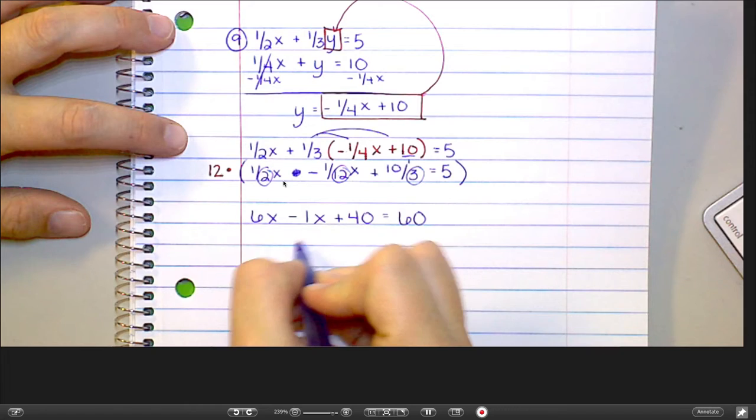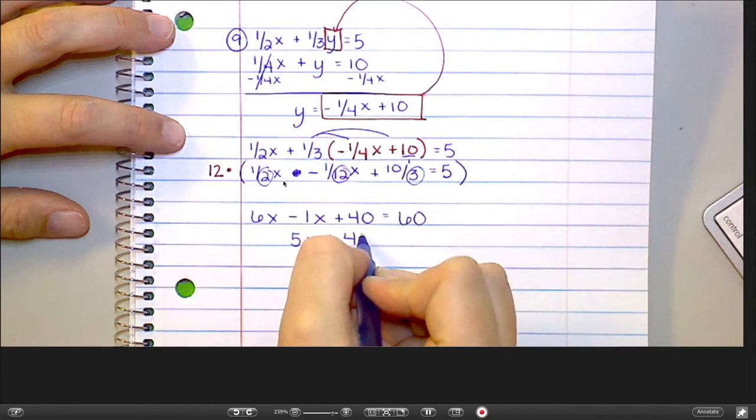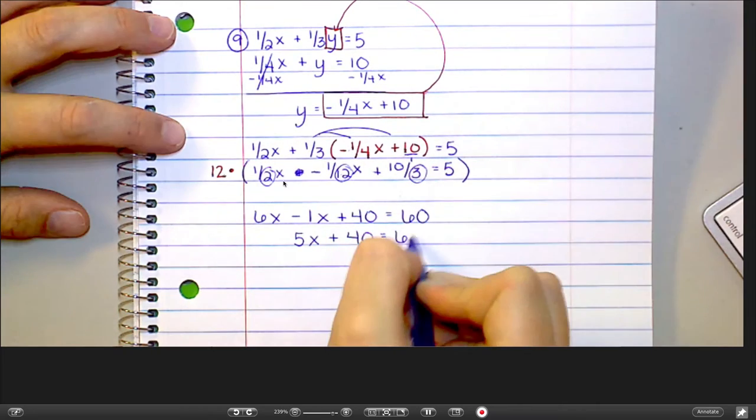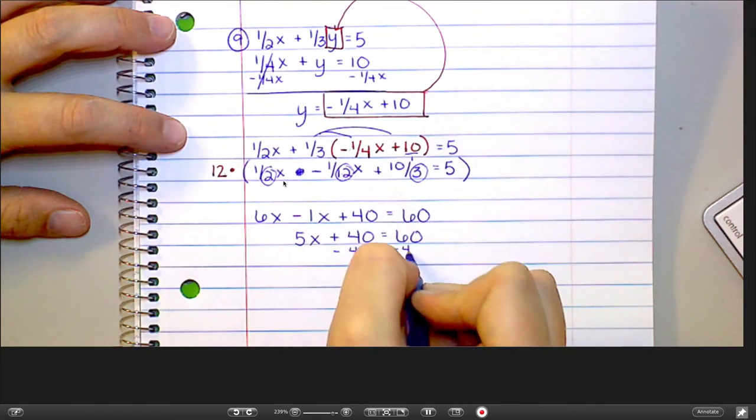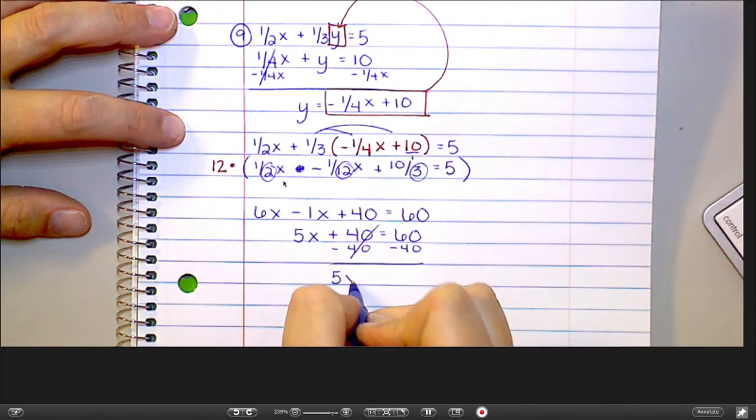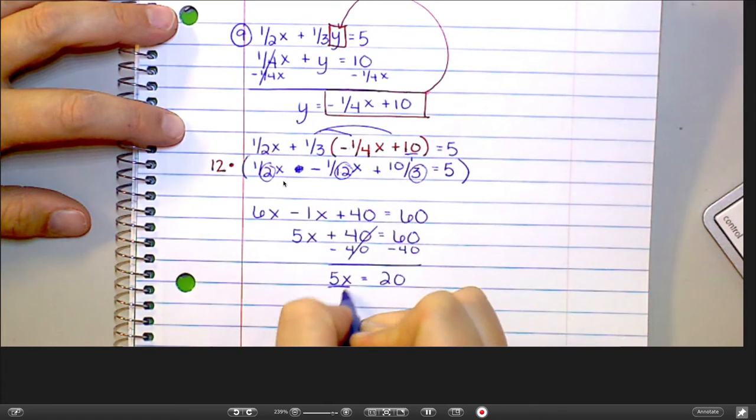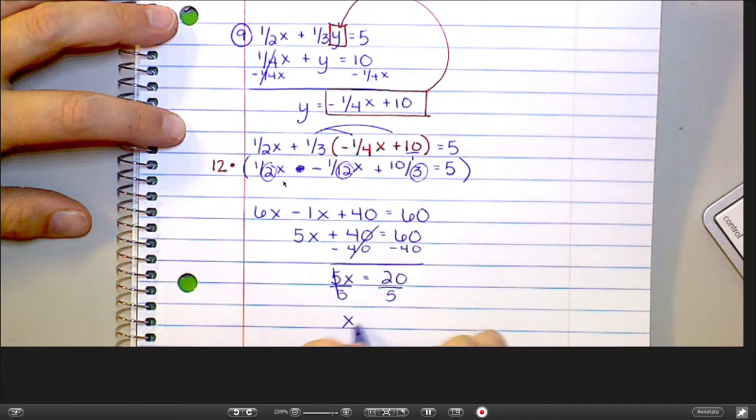So 6 minus 1 is 5. 5x plus 40 equals 60. Subtract the 40. So 5x equals 20. Divide by 5. And x equals 4.